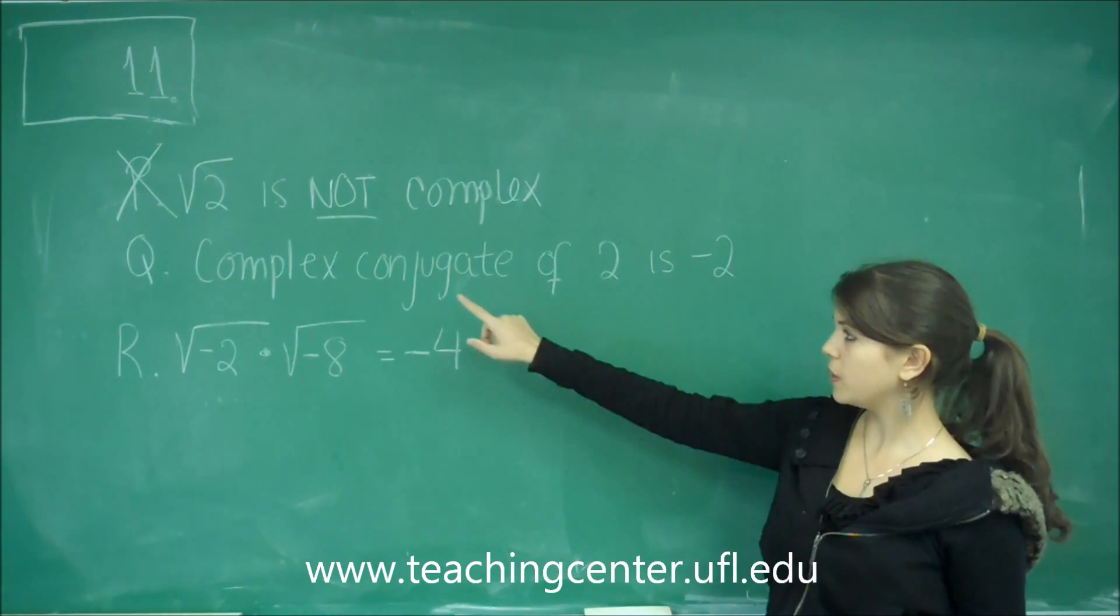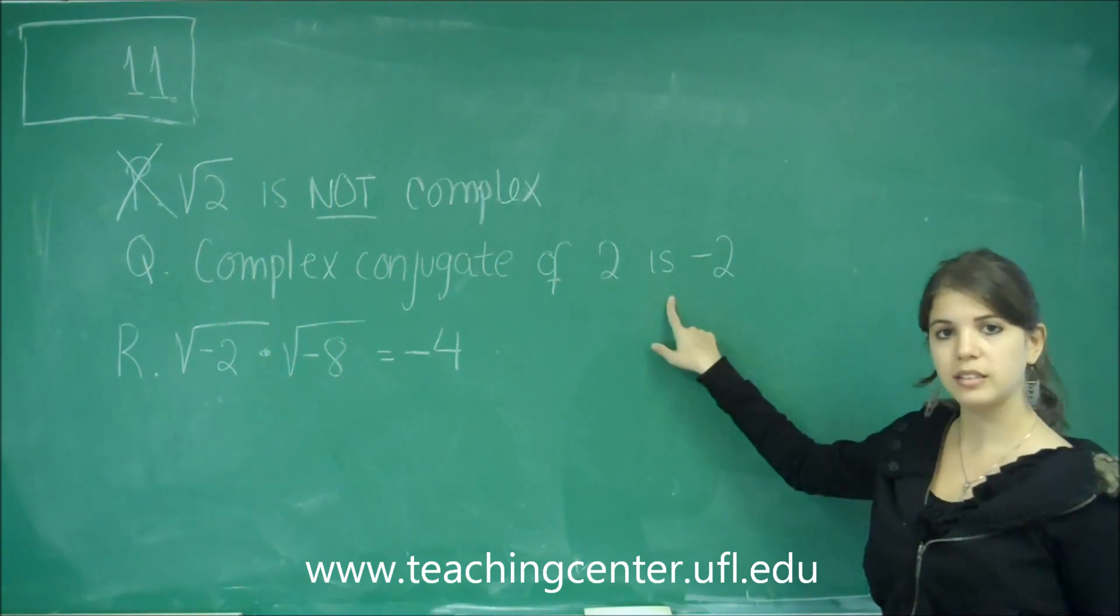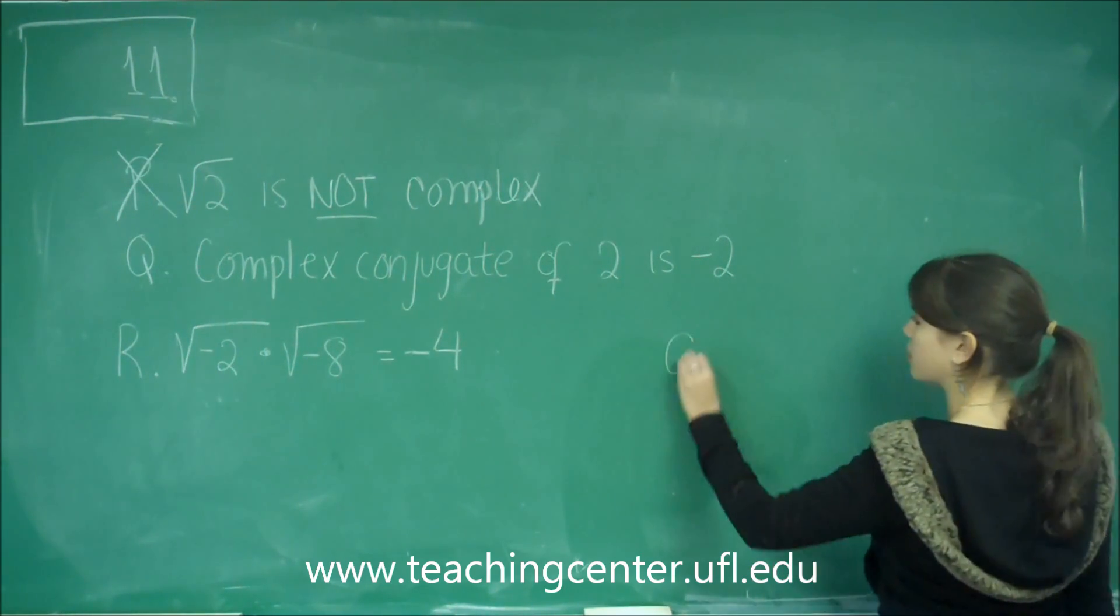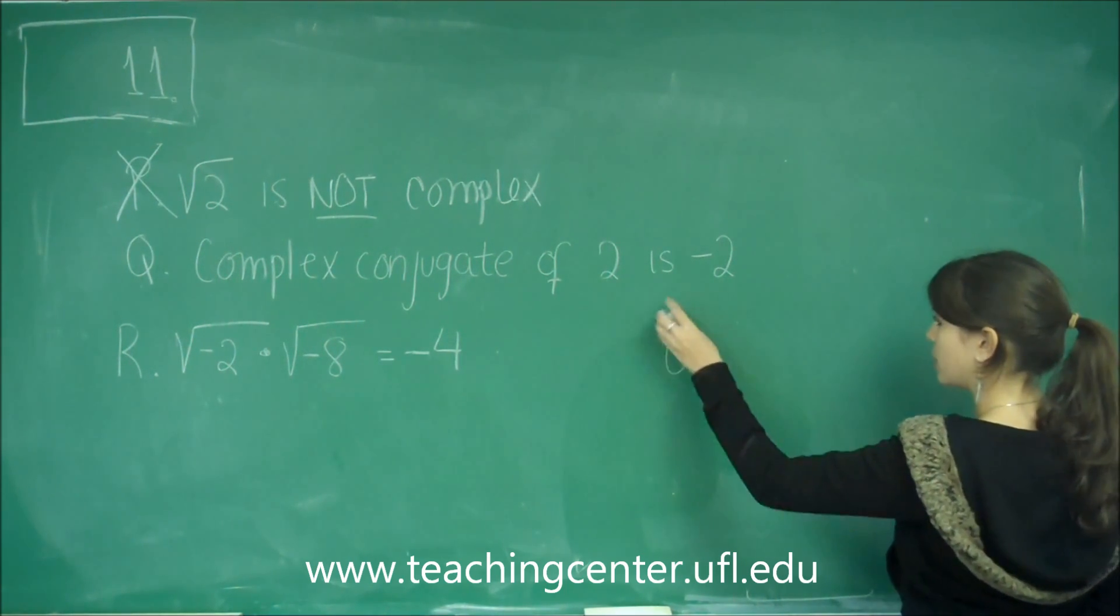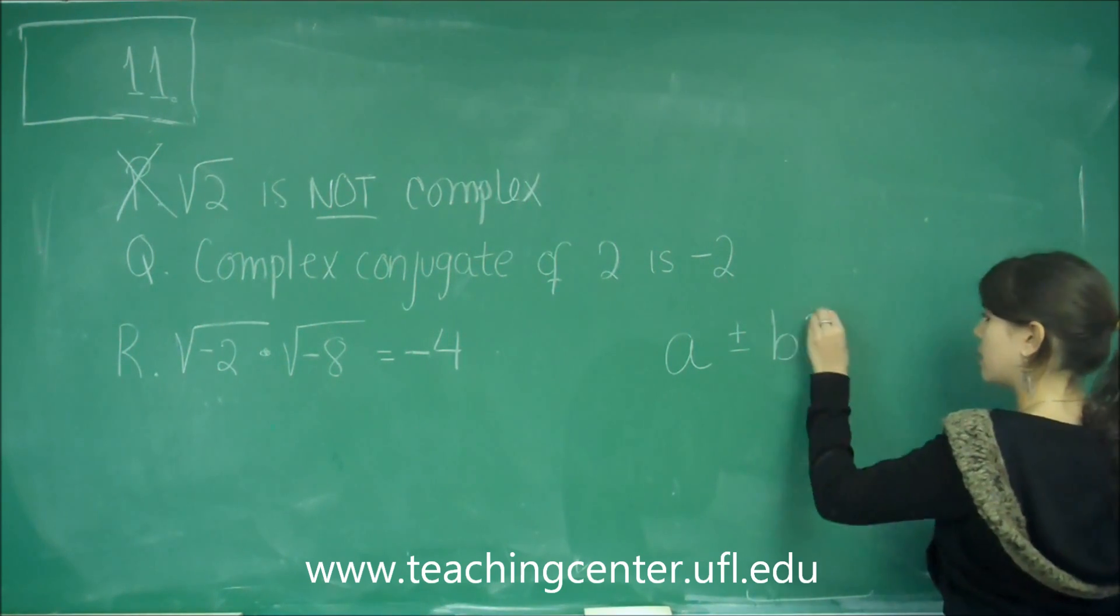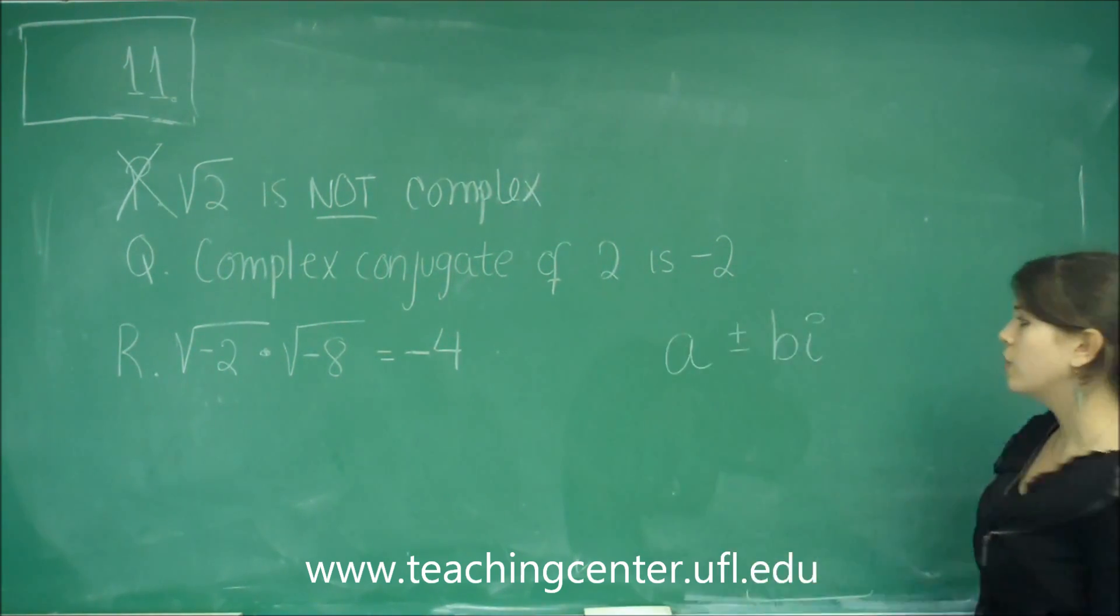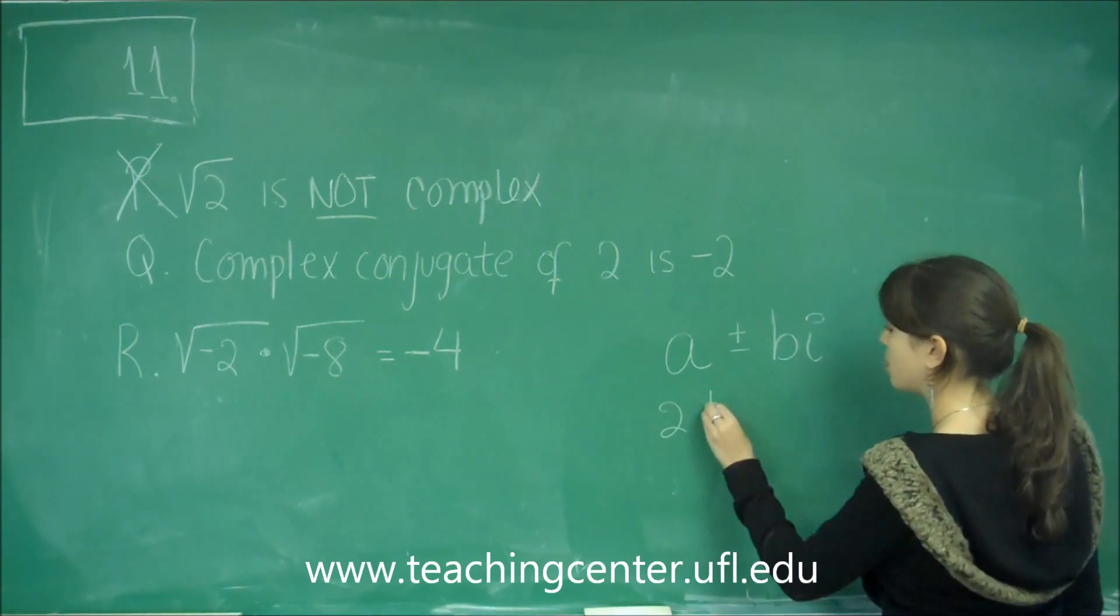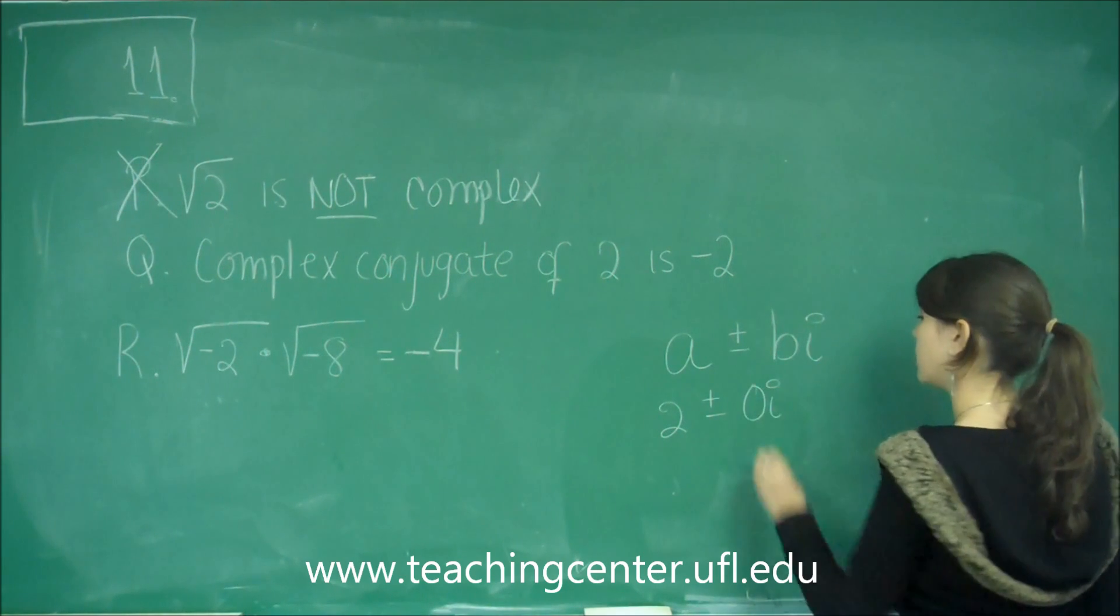Now, part Q says, complex conjugate of 2 is negative 2. Again, the complex number definition is A plus or minus B, I. So, 2 is like writing 2 plus or minus 0, I.